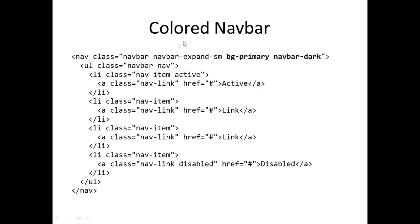As an example of a colored navbar: the same code as before but with bg-primary and navbar-dark. If you use navbar-dark, the text will be colored light and bg-primary will be used as the background. If you use bg-light with navbar-light, then the text will be in dark colors with a light background.